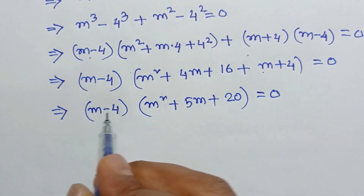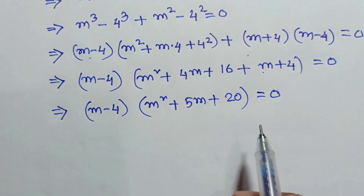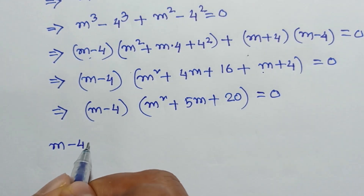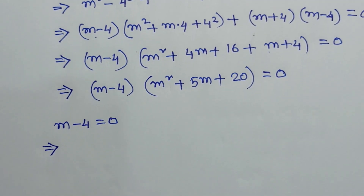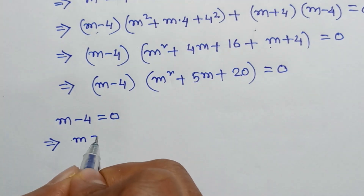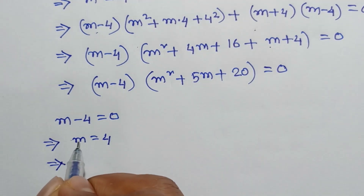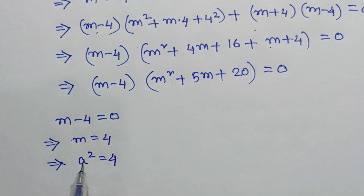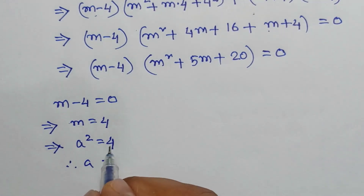So either m − 4 = 0, giving m = 4. Substituting back m = a², we get a² = 4. Taking the square root of both sides: a = ±√4 = ±2.